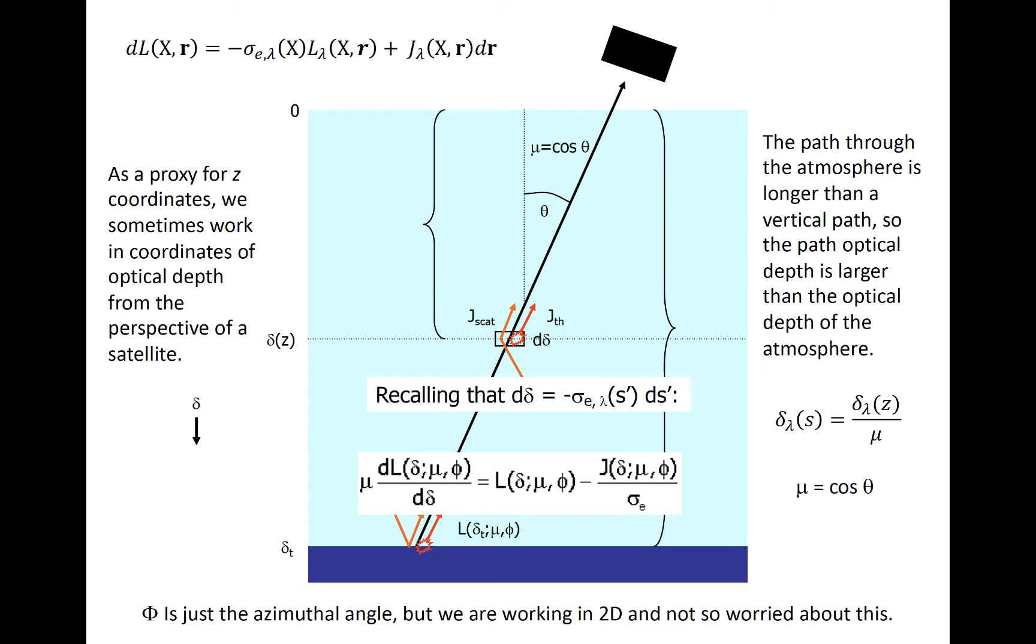Recall that the definition of optical thickness, and differentiate both sides of that equation, and you get what you see here. Knowing some simple algebra will yield the following equation that is just Schwarzschild's equation with the possibility of a slant path included, and that's shown by Mu.